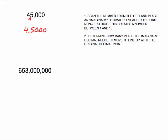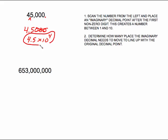I'm going to drop those trailing zeros and write 4.5 instead, times 10 to some power. My original decimal is sitting at the end of the number, and here's my imaginary decimal. It needs to move 1, 2, 3, 4 places to get back to where it was originally. So that number in scientific notation is 4.5 times 10 to the fourth.